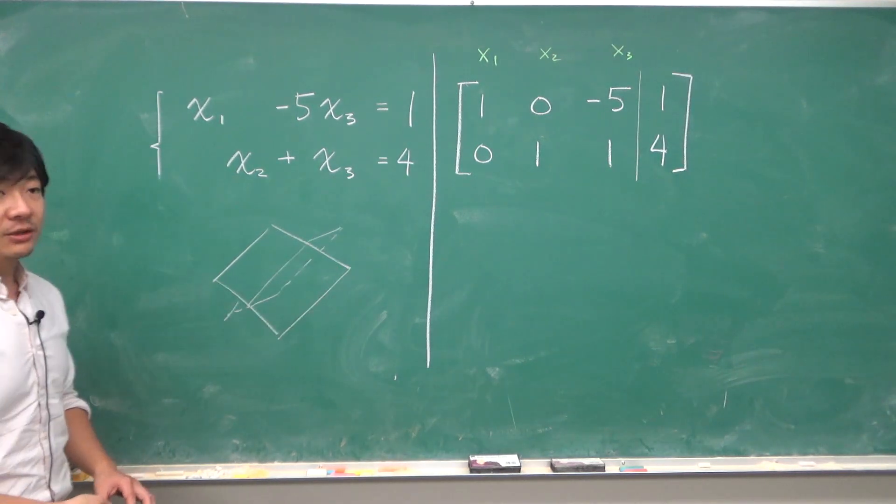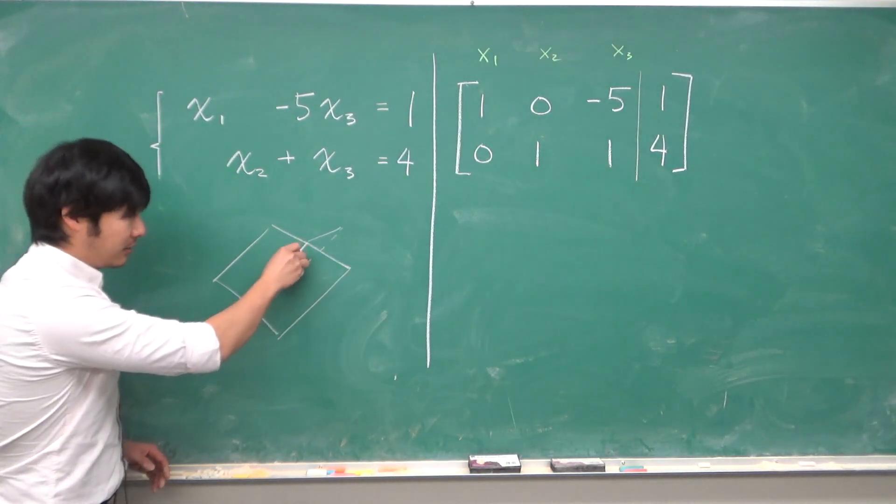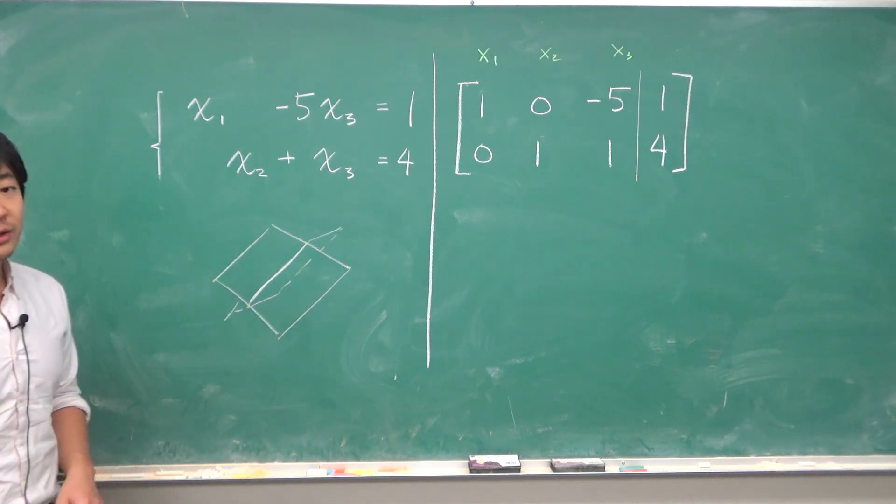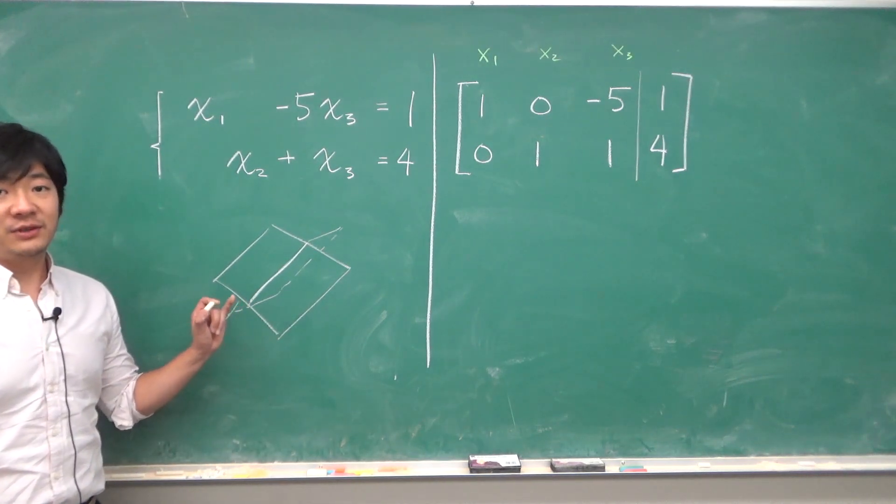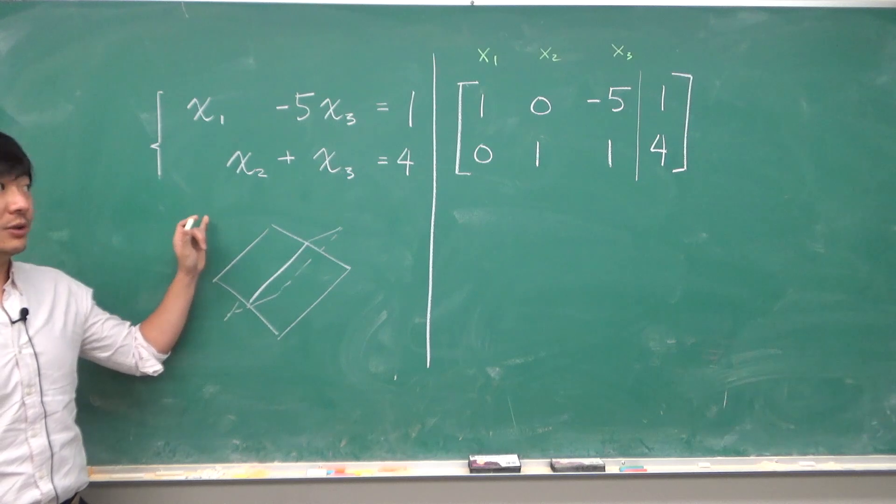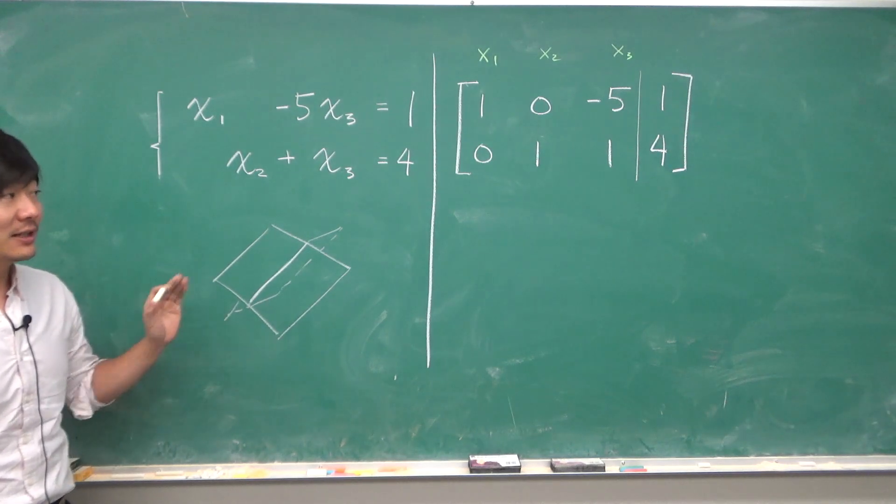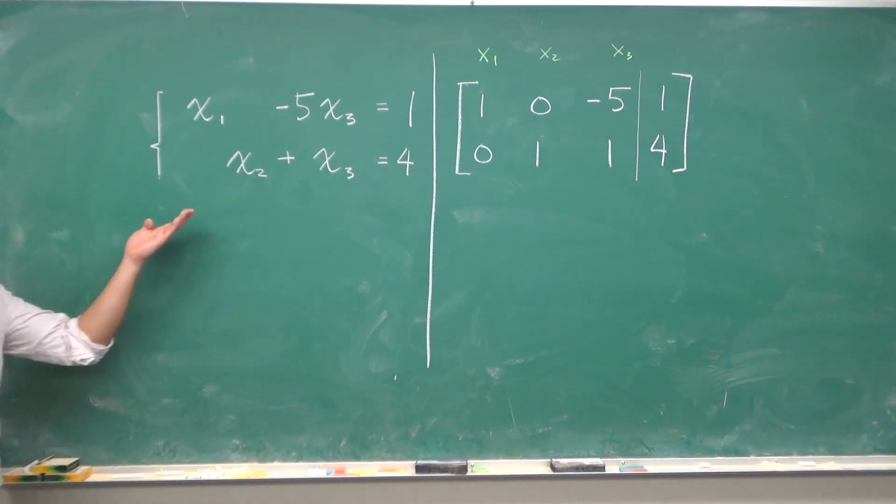When planes intersect, they intersect at a line, so we would actually have infinitely many solutions to this equation. How can we write it down working from the equation?